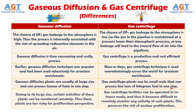Difference number 9. Owing to its large size, certain activities of gaseous diffusion plants can be monitored remotely. Thus these plants are less risky from a proliferation perspective. In contrast, gas centrifuge facilities can be operated in in-house mode, making it difficult to remotely monitor any activity of such plants. This poses the risk of nuclear proliferation.